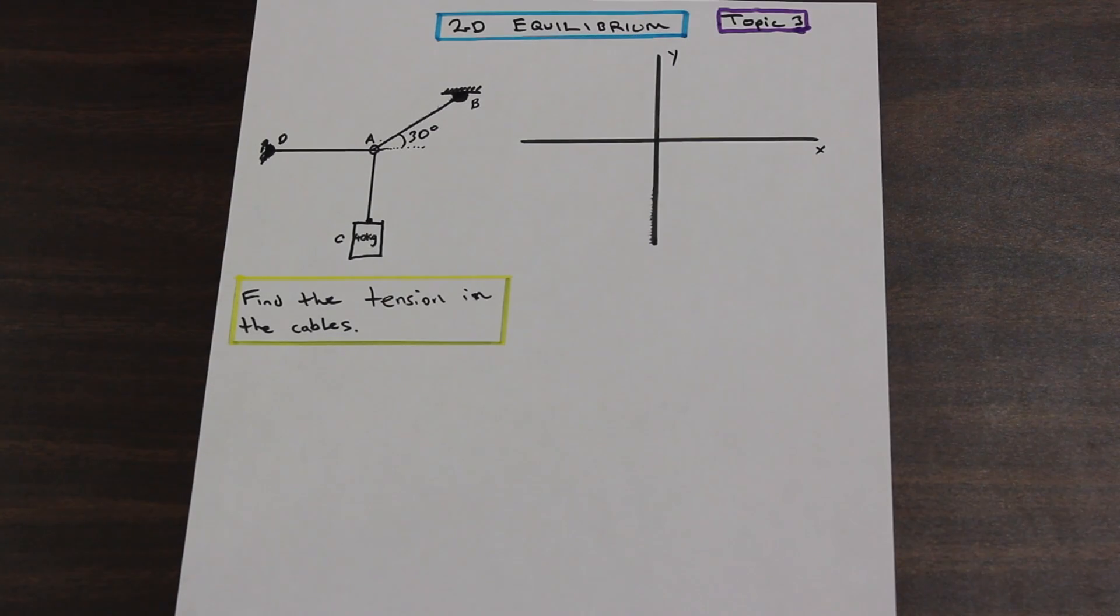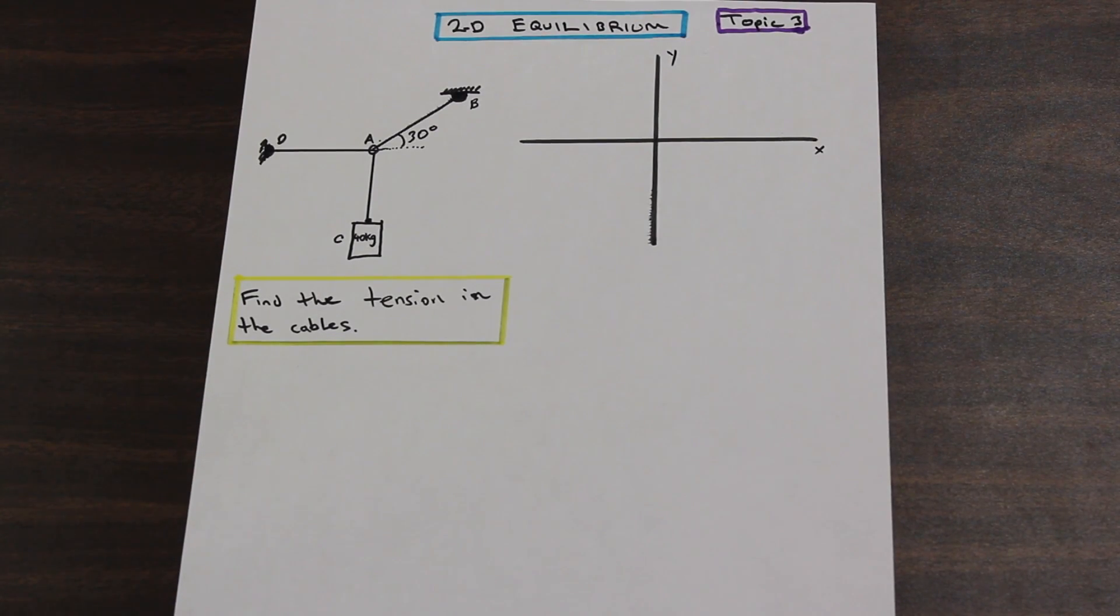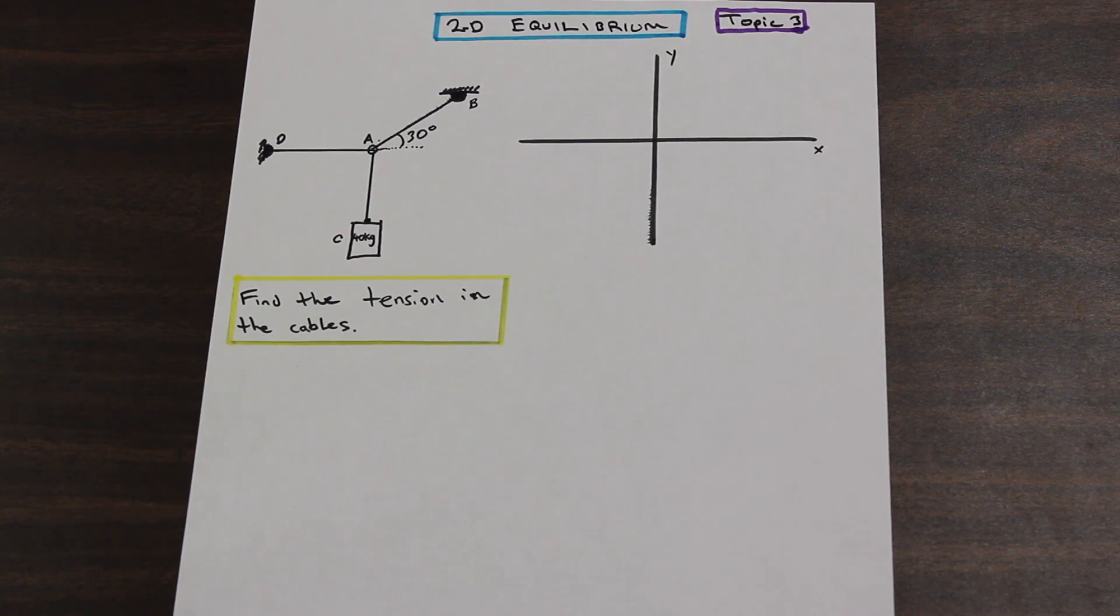Hello everyone, Fred here from AF Math and Engineering. We are back and we are solving a problem on 2D equilibrium. So this is something that you probably should have done in high school. If not, that's okay because it's fairly straightforward.